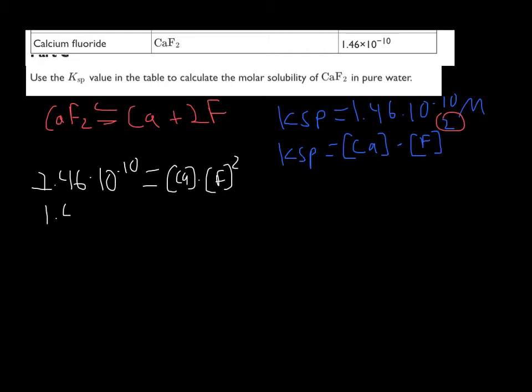Now, here's the tricky part. We have to represent these with an X as we always do. So, we got 1.46 times 10 to the minus 10 equals X. But, for F, we have to do 2X, since it's twice the concentration there,